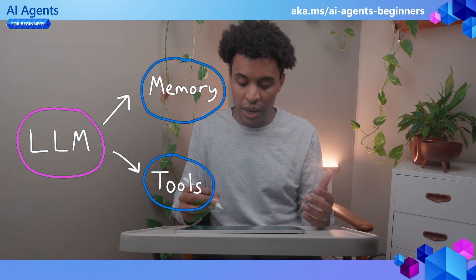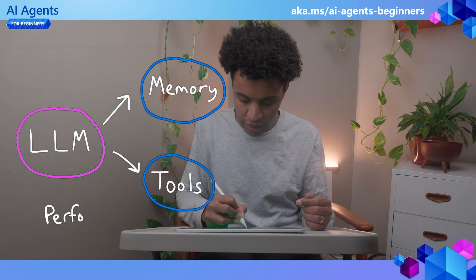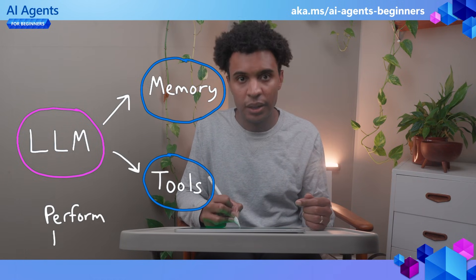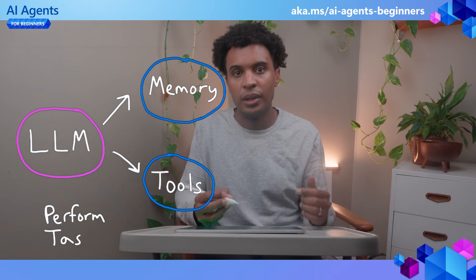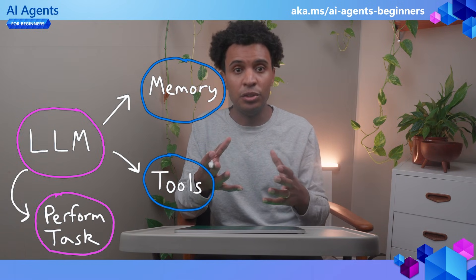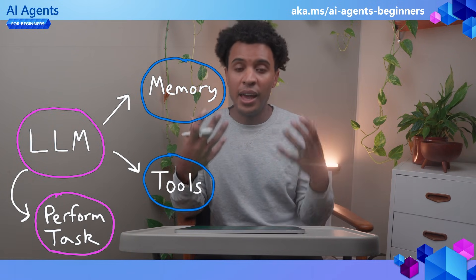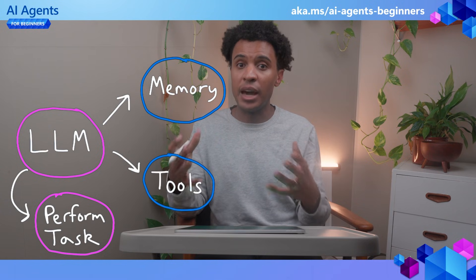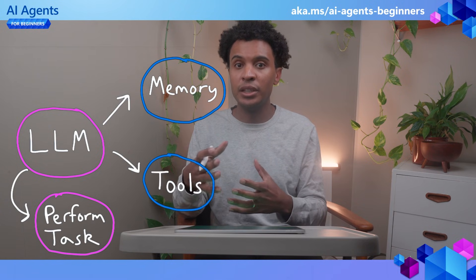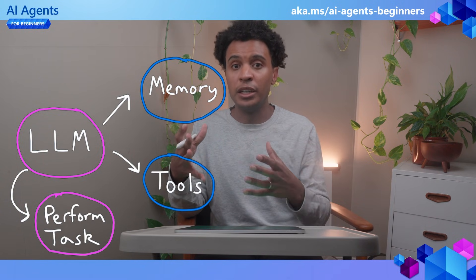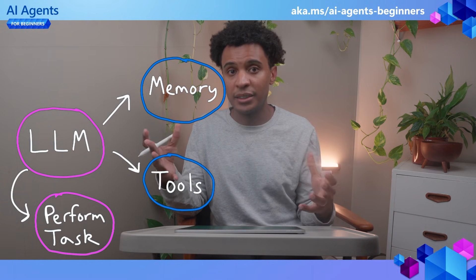Combining all of these things, an agent uses the LLM to recognize the task the user would want to complete, identify what available tools are needed to complete that task, and memory to gather the information and data needed to complete that task.